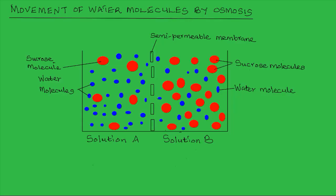When two solutions that have different concentrations are separated by a semi-permeable membrane, water molecules will flow from their region of high concentration to region of low concentration. In this illustration, there are two solutions, solution A and solution B, separated by a semi-permeable membrane.